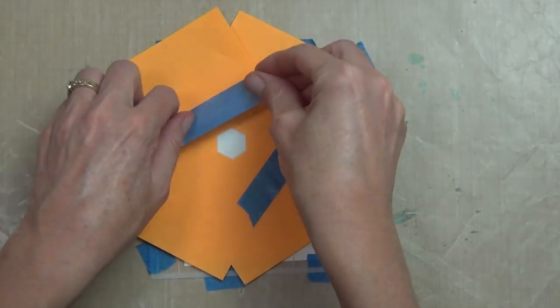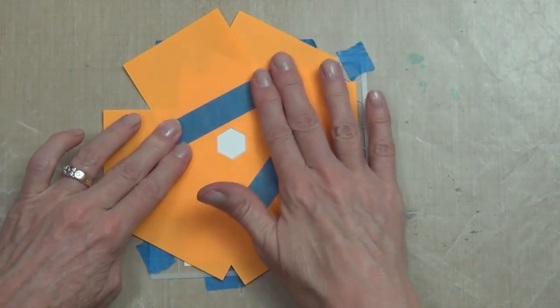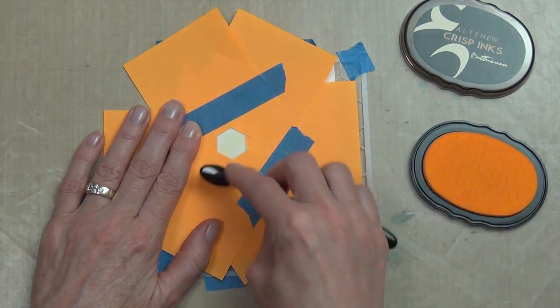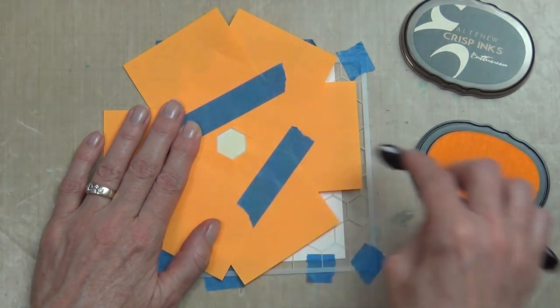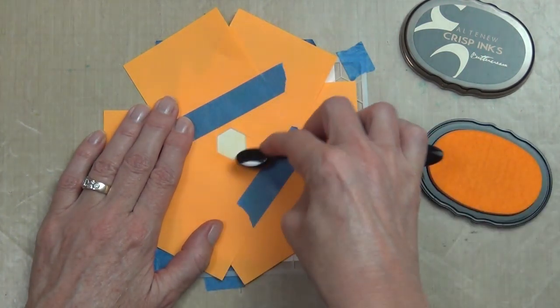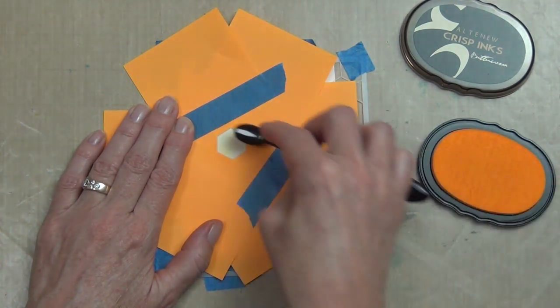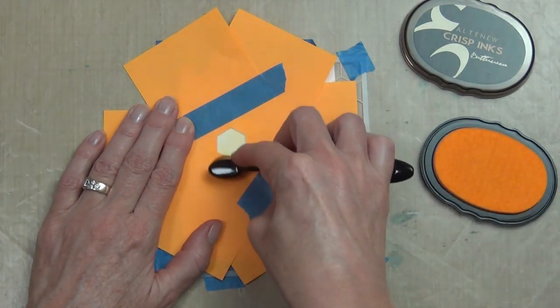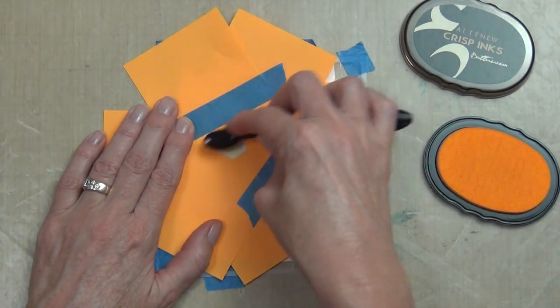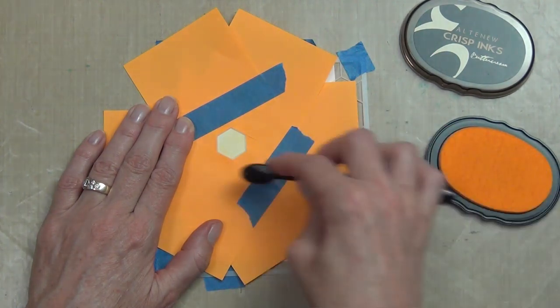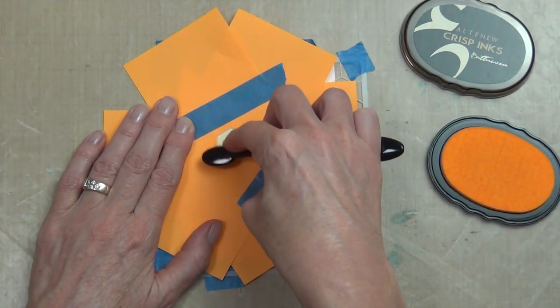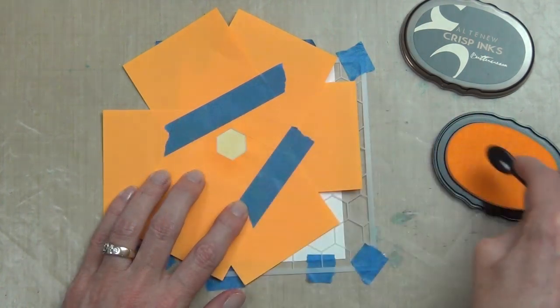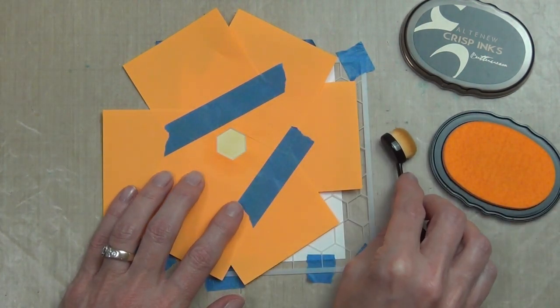I used my post-it notes and have actually masked around one of the honeycomb holes. What I've done is added some more tape on top to actually tape all the masks together, and that way I've got a piece that I can lift off and move around and add color to my cardstock through the stencil without having to recreate my mask every time. I can just reuse this mask.